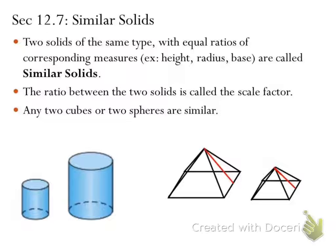In this section we're looking at similar solids. We consider two solids similar if they're the same type, so the same type of solids, cylinders, pyramids, cones, spheres, whatever the case may be, with equal ratios of corresponding measures called our height, radius, base, different measurements we may look at. We consider those again similar solids. Now the ratio between the two solids is called the scale factor.